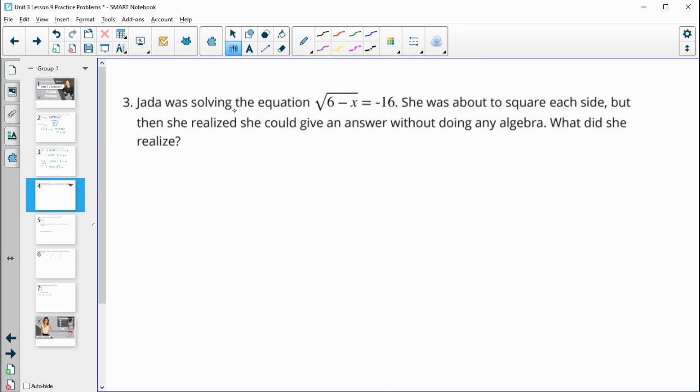So for number 3, Jada is solving the equation square root of 6 minus x equals negative 16. She was about to square each side but then realized she could give the answer without doing any algebra. She realized that she had a square root equal to a negative number, and that's not possible. That means there's no solution, so she doesn't need to go any further.